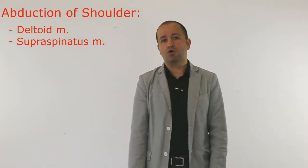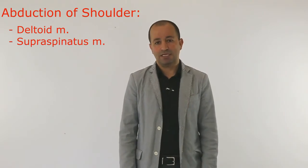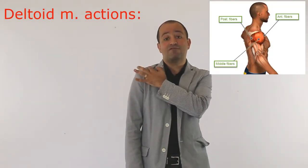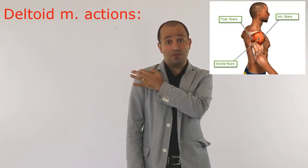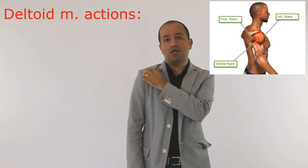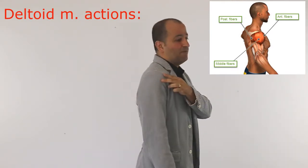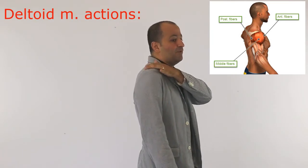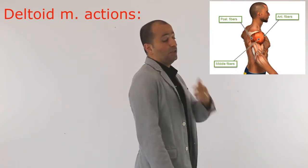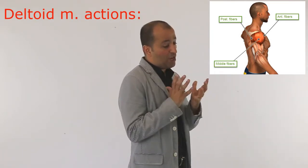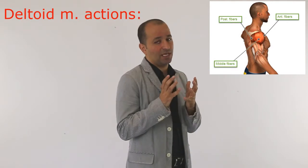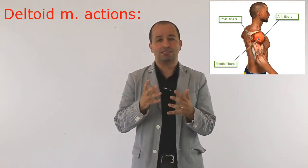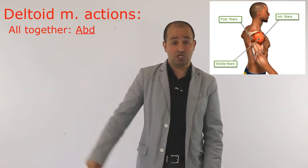A little bit more you need to know about deltoid muscle. Deltoid muscle actually has three types of fibers. Some fibers are more on the anterior side, some fibers are on the middle side, and some fibers are on the posterior side. If all three fibers work together, the action is abduction.